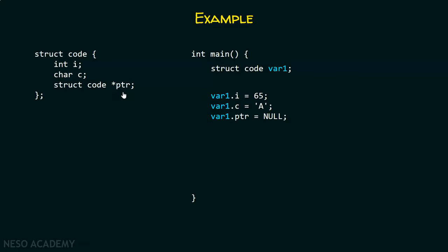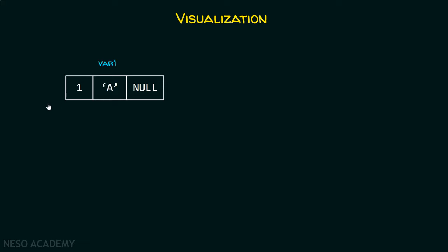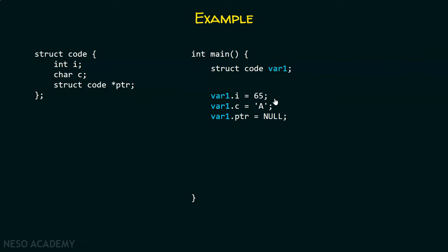At the end of the day, ptr is a pointer — it contains an address. Initially it contains null. Let's visualize how var1 looks. var1 is a variable of type struct code with three members: the first variable initialized with 65, the second with 'a', and the pointer initialized with null.